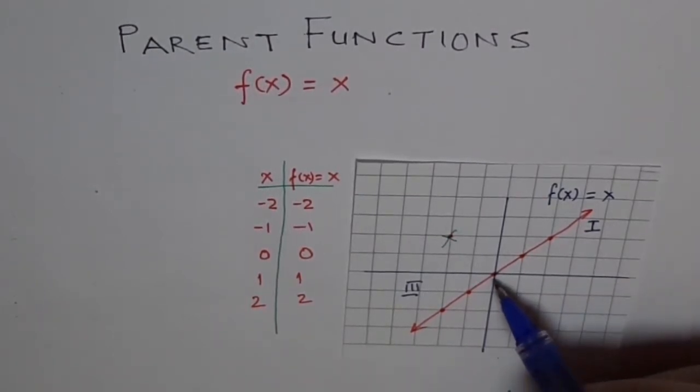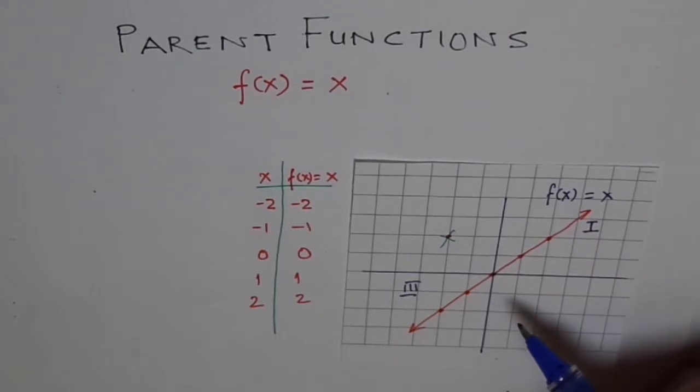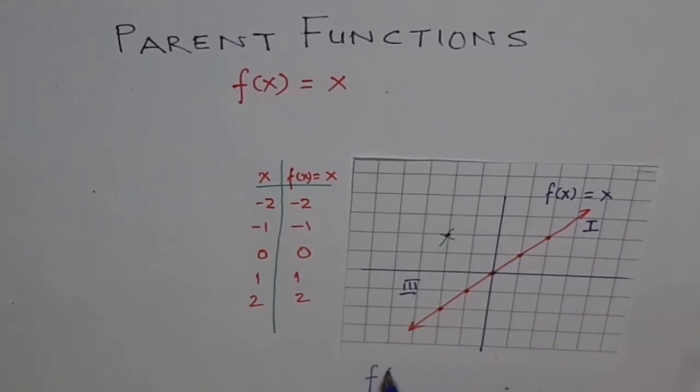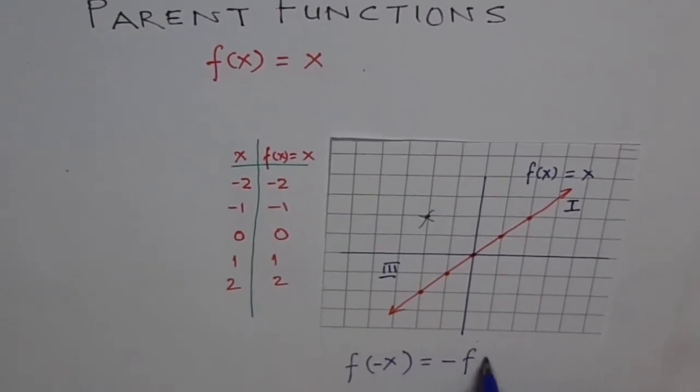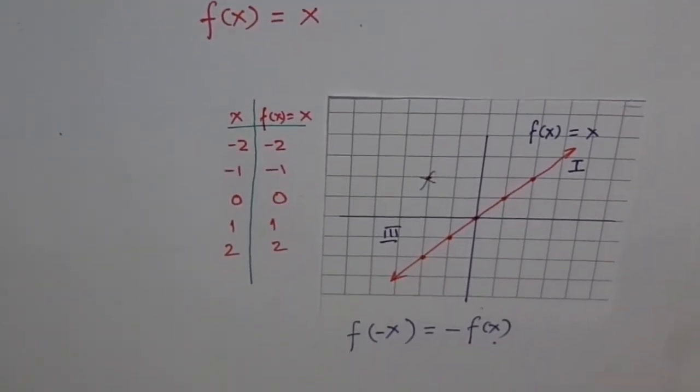It goes through origin. The x intercepts and y intercepts both are 0, x equals to 0 and y equals to 0. And it is also an odd function. It is an odd function. Odd function I hope you remember is when we say f of minus x is equal to minus of f(x). Let me tell you a bit about our function now.